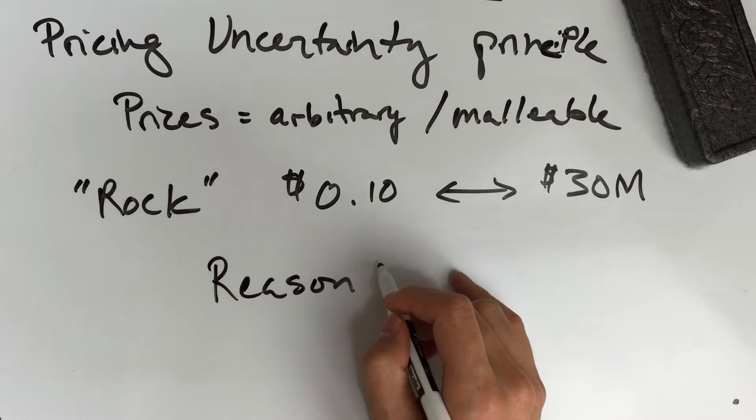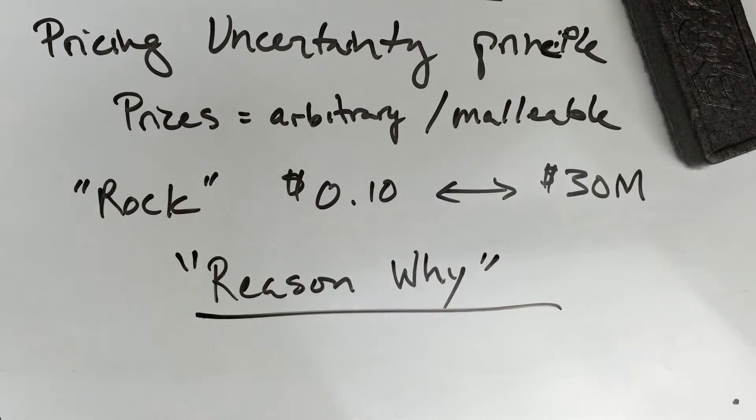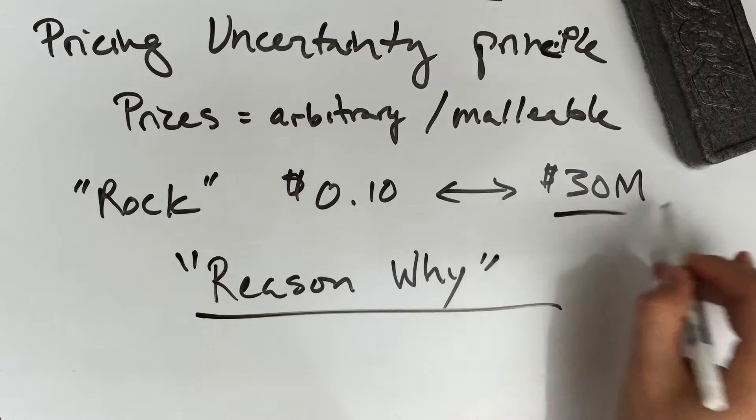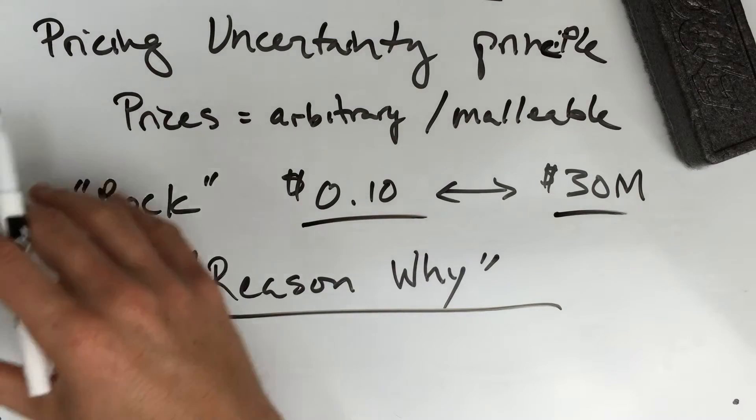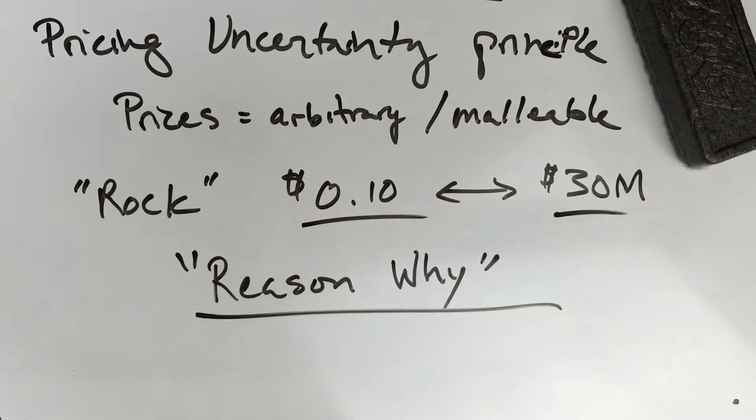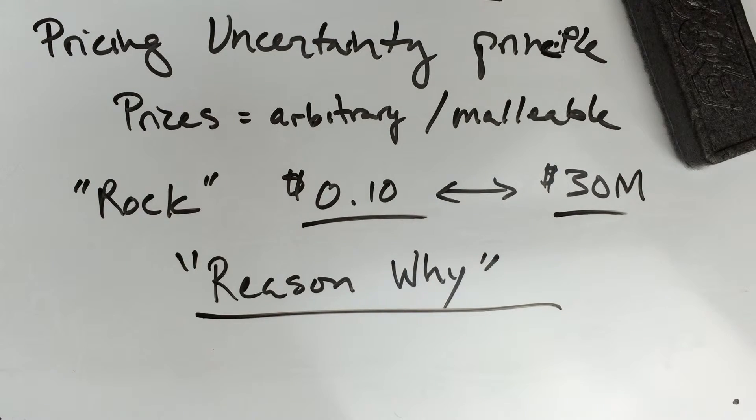The way he talks about it in the book is 'reason why,' which makes sense to justify your pricing. If this rock is a diamond, the rarest diamond on earth, maybe this price is justified. If it's a common rock, maybe this price is justified. But if you want to set a logical price, you need to provide a reason why.